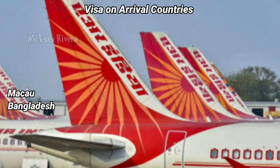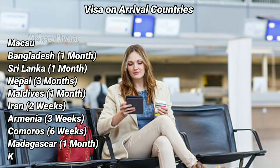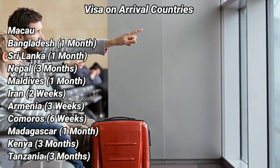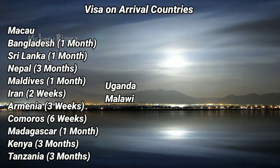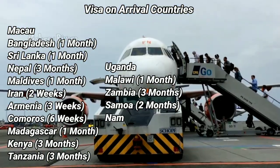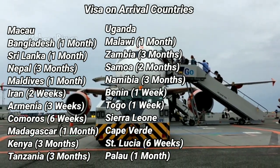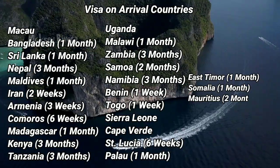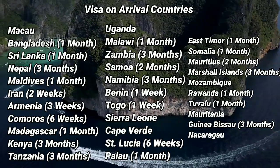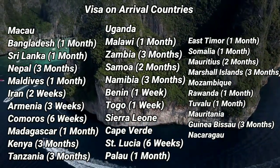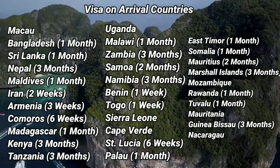There are 32 countries where Cambodian passport holders can get a visa on arrival: Macau, Bangladesh (30-day stay), Sri Lanka, Nepal, Maldives, Armenia, Comoros, Madagascar, Kenya, Tanzania, Uganda, Malawi, Zambia, Samoa, Namibia, Benin, Togo, Sierra Leone, Cape Verde, St. Lucia, Palau, East Timor, Iran, Somalia, Mauritius (2-month stay), Marshall Islands, Mozambique, Rwanda, Tuvalu, Mauritania, Guyana, Papua New Guinea (90-day stay), and Nicaragua.